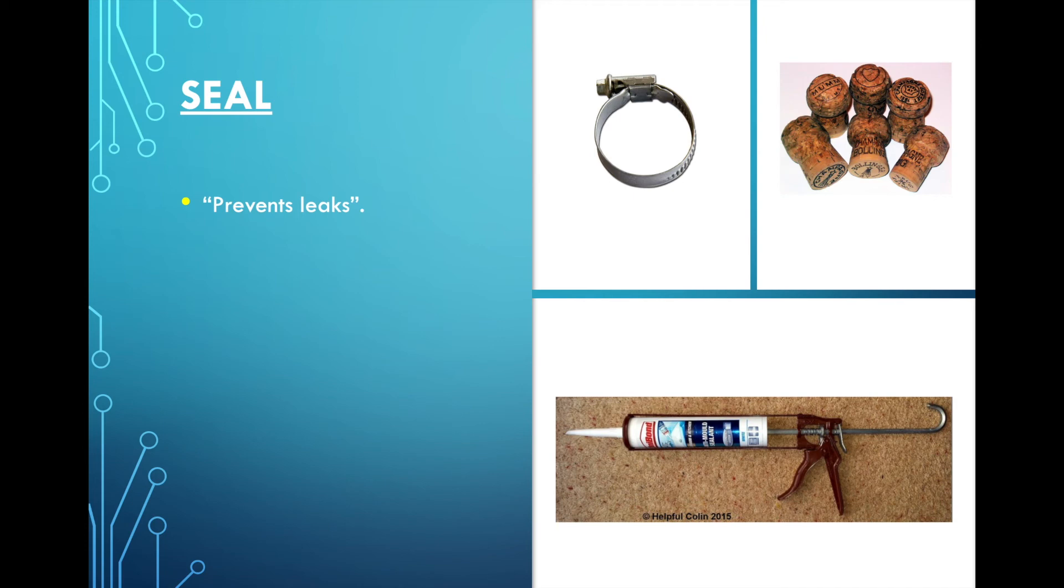And then at the bottom here, we have some caulking. So we'll put some caulking around a sink, for example, or a bathtub to make sure that if there's water that splashes, it won't go under the sink or the bathtub. So we're sealing everything.